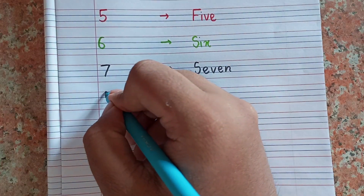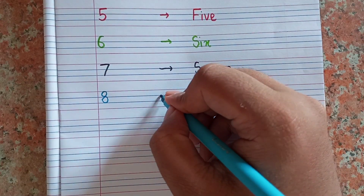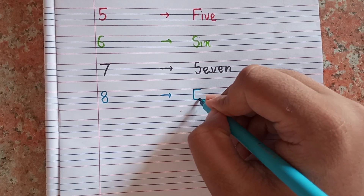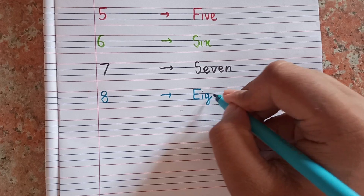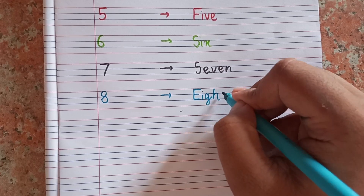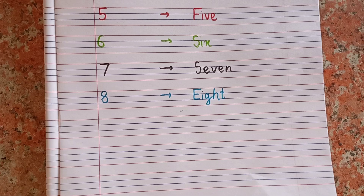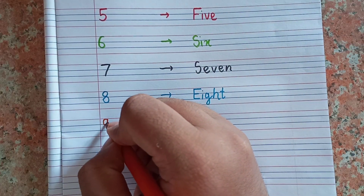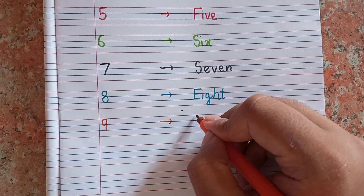After 6, next number will be 7. This is 7 and spelling of 7 is S-E-V-E-N. 7, S-E-V-E-N. After 7, next number will be 8. This is 8 and spelling of 8 is E-I-G-H-T. 8, E-I-G-H-T.